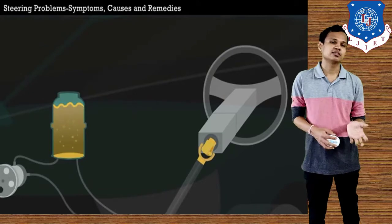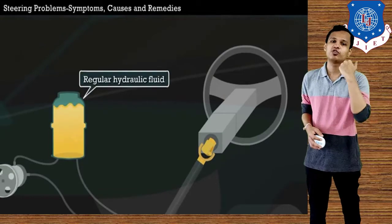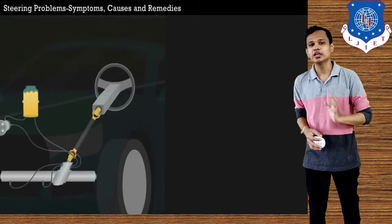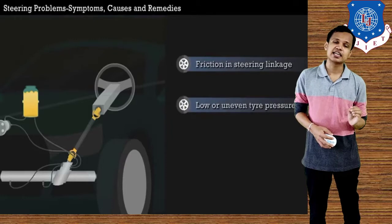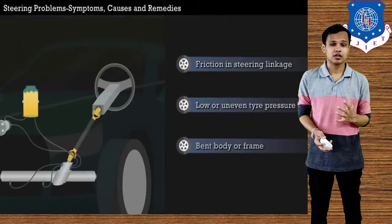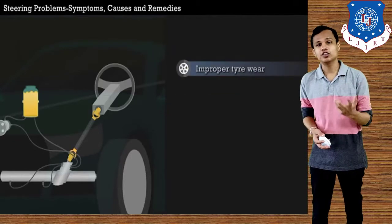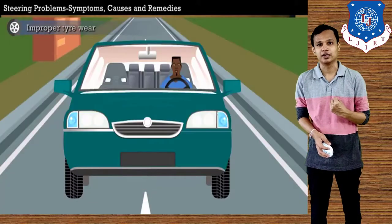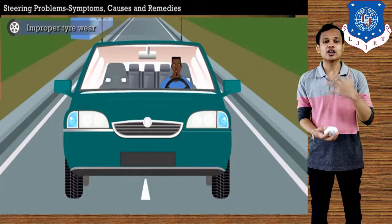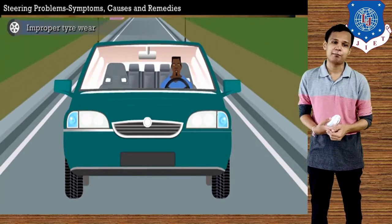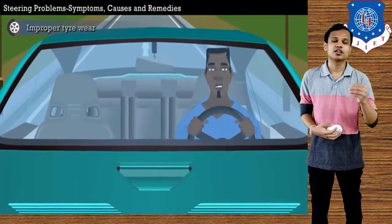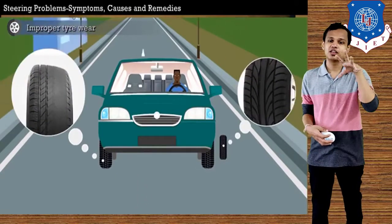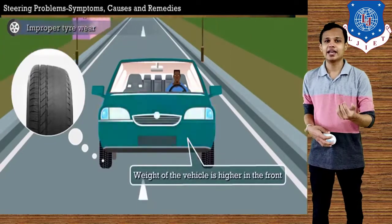Let's see what can be the problems in the steering system. In case of power steering, if the hydraulic fluid is contaminated, that can affect our steering and it will need to be replaced. If there is friction in the steering, leakage, or if the tire pressure is uneven, or if the body frame is bent, those things can cause improper tire wear. The vehicle can also pull to one side, and steering kickback can happen — kickback means the steering jolts back towards the driver's side.